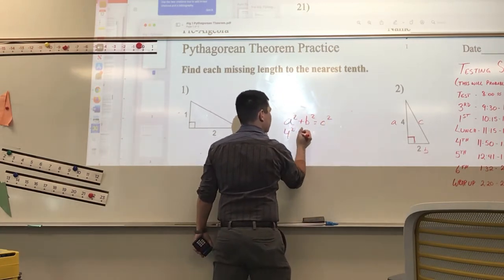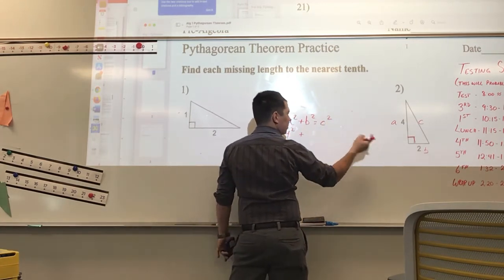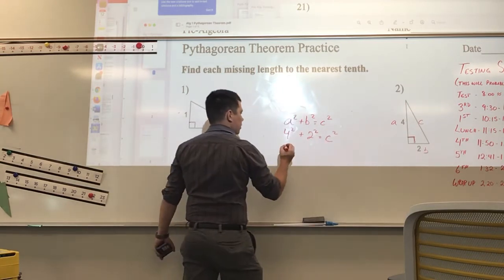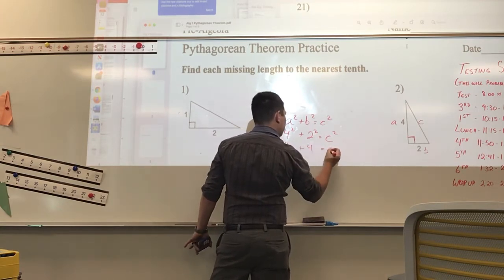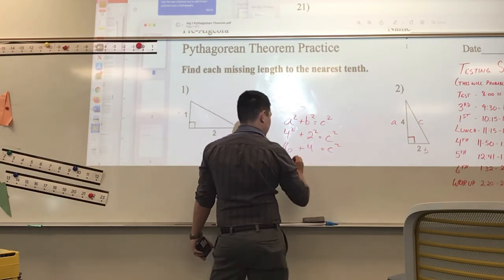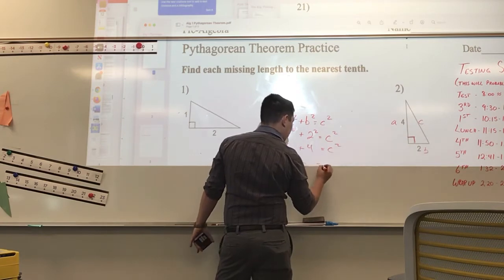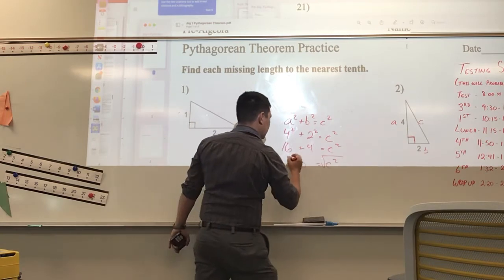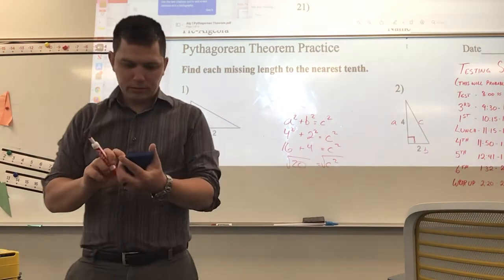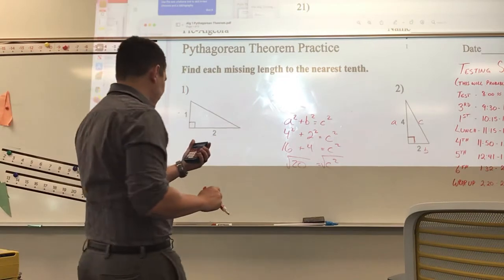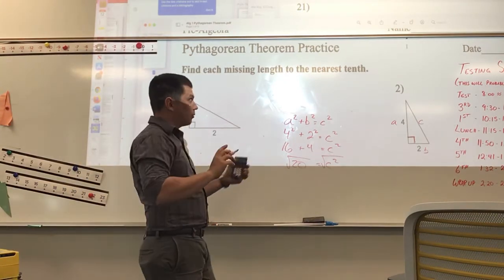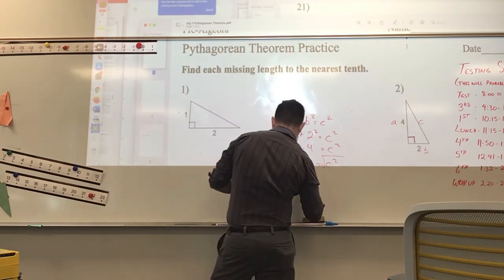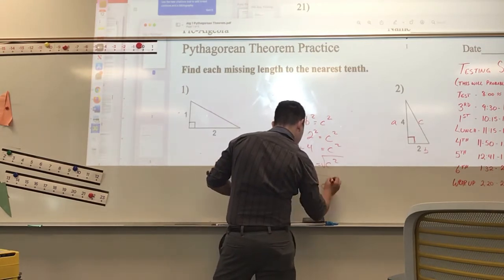A is 4, so 4 squared plus B is 2 — 2 squared equals C squared. 4 squared is 16, plus 4 equals C squared. 16 plus 4 is 20, equals C squared. How do I get that C by itself? Take the square root. The square root of 20 is 4.4721359. Rounding to the nearest tenth, square root of 20 is 4.5, equal to C.